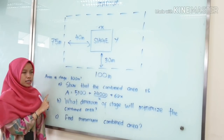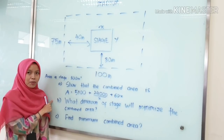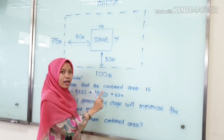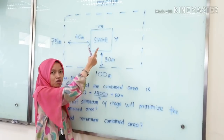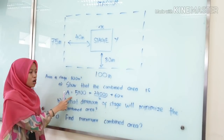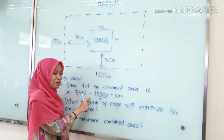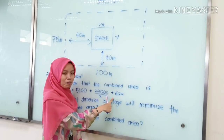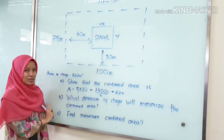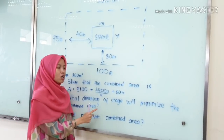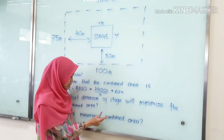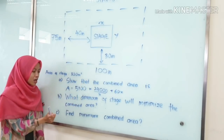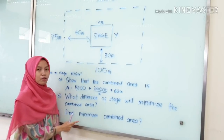In this question, we need to apply maximum and minimum technique to solve this question. The first question is we need to show that the combined area — which is the area of the stadium and the area of the stage — is equal to 5100 plus 24000 over X plus 60X. The next question is what is the dimension of stage that will minimize the combined area. Last, we need to find the minimum combined area.